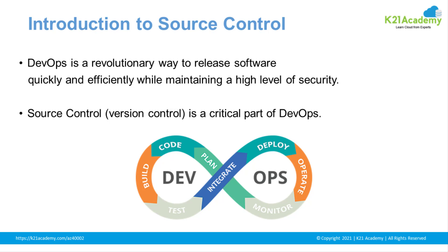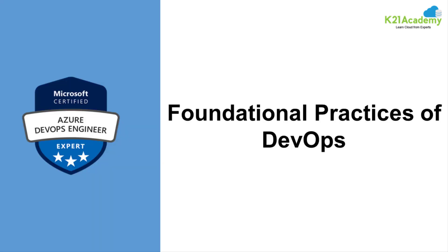DevOps is a revolutionary way of releasing software quickly and efficiently while maintaining a high level of security. In the complete DevOps lifecycle — code, build, test, release, deploy, operate, maintenance, and planning — source control is the main part, because all of these stages can be saved and version-controlled to track every change you make.